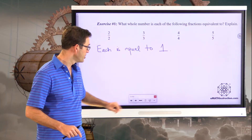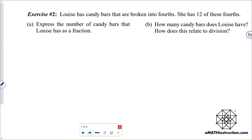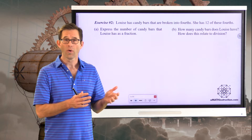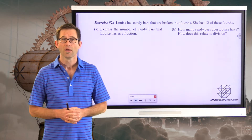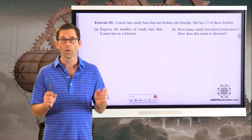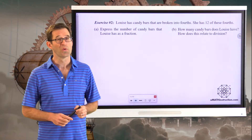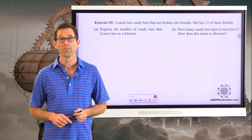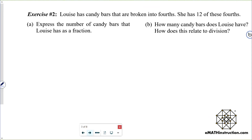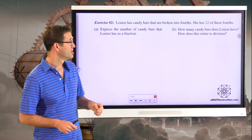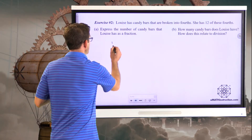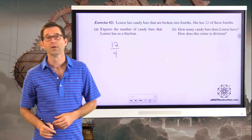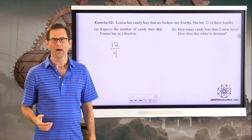In exercise number two, Louise has candy bars that are broken into fourths. She has 12 of these fourths. Letter A asks us to express the number of candy bars that Louise has as a fraction. We've been told that each candy bar has been broken up into four equal pieces, and she's got 12 of those fourths. She has 12 fourths — that's what she has.